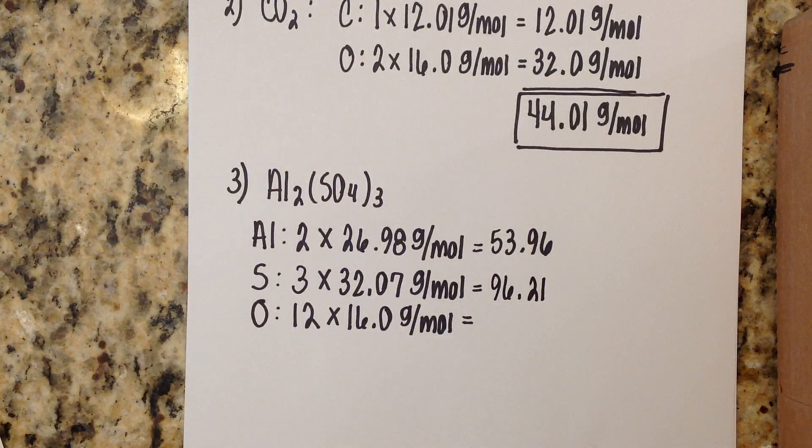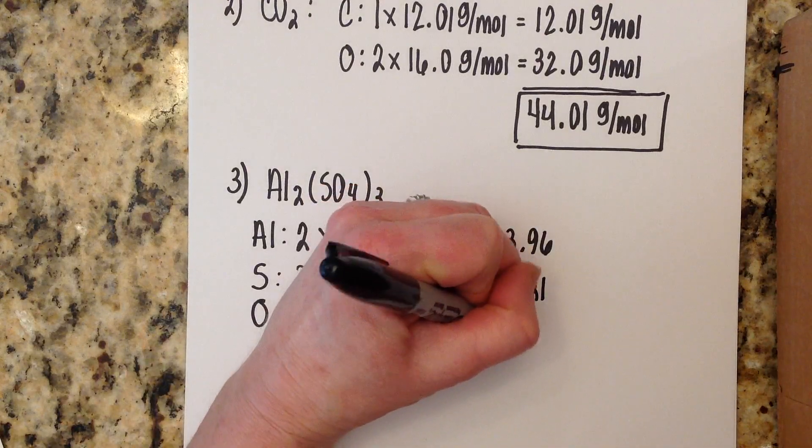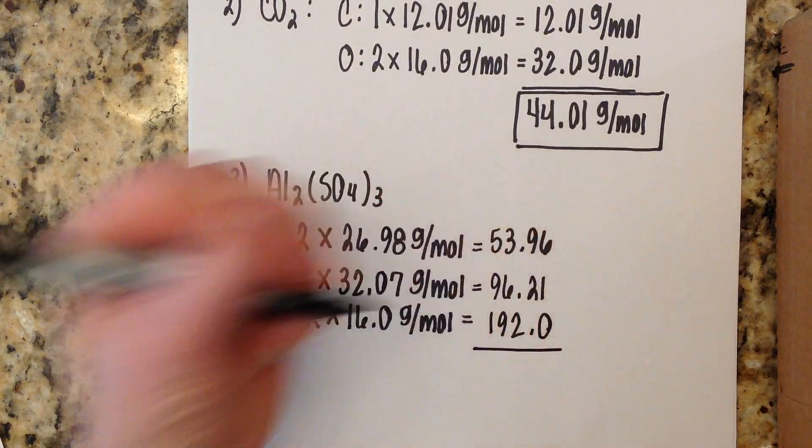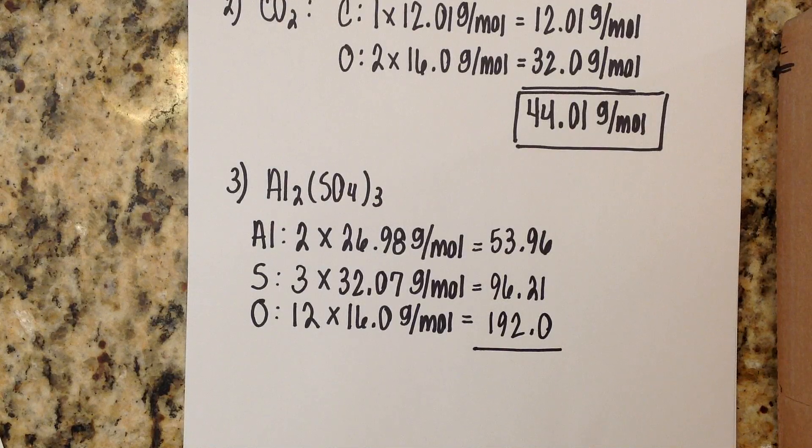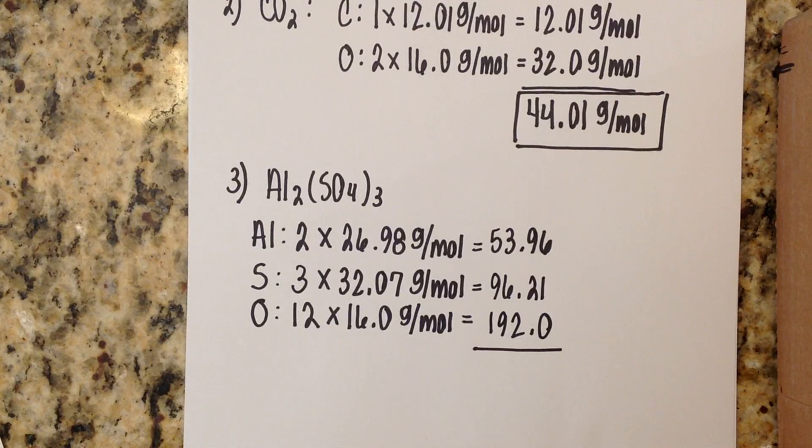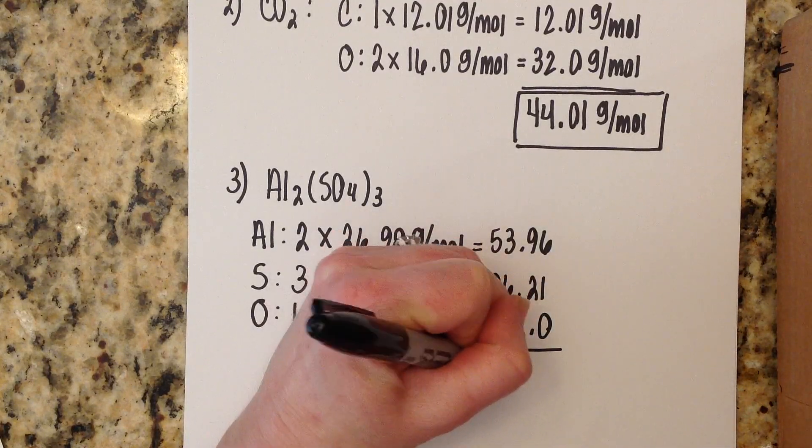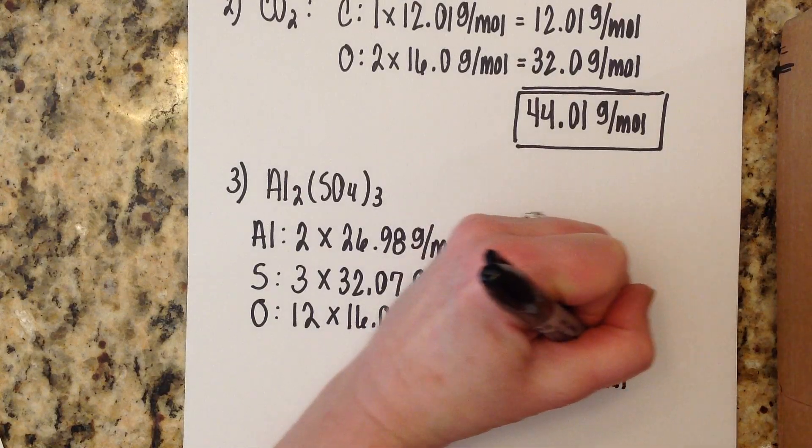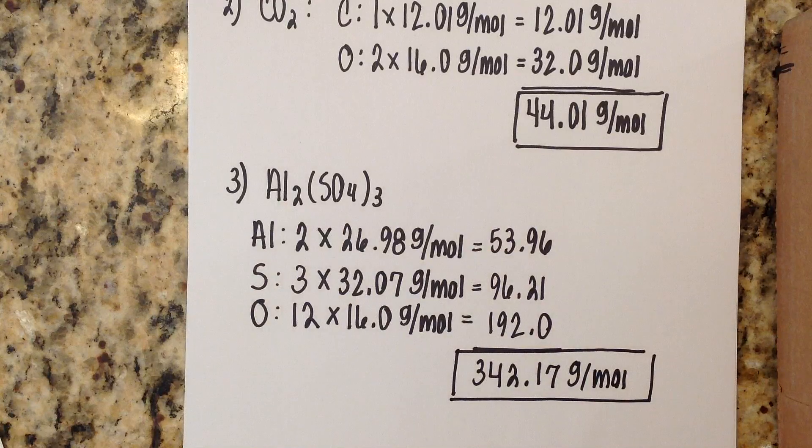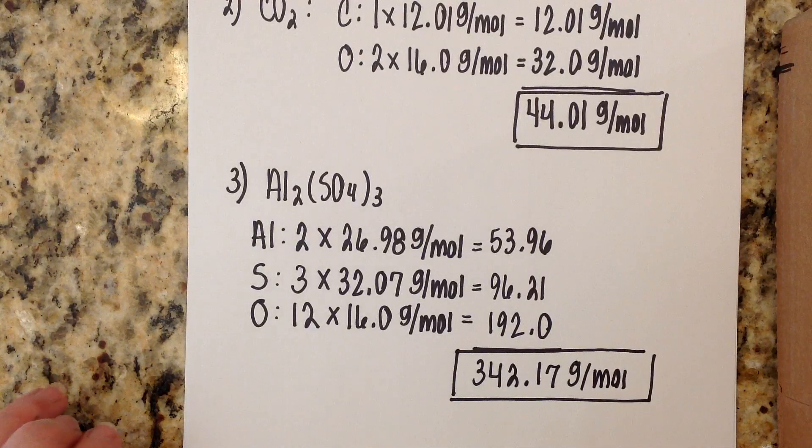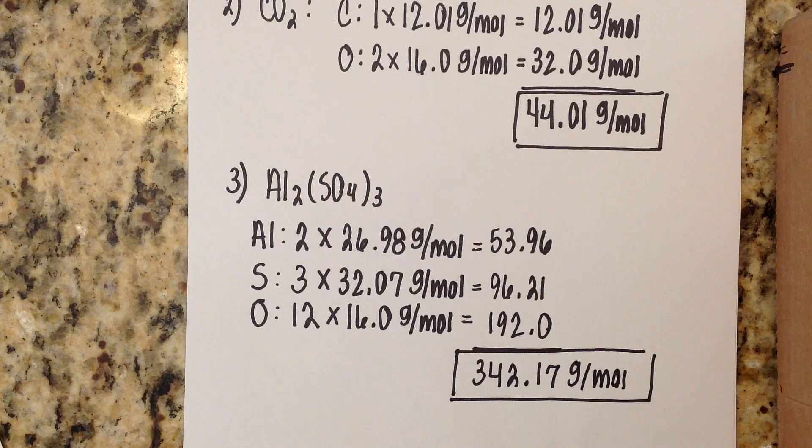And then 16 times 12, which is 192.0. Now we know all of these are gram per mole, and if we add them together we're going to get the total mass of aluminum sulfate. So 192 plus 96.21 plus 53.96 equals 342.17 grams per mole. And that is the molar mass of aluminum sulfate. So that is how you calculate molar mass for a chemical formula, molecule, compound, however you're referring to it - a combination of atoms. This is how you find molar mass.